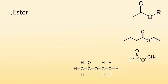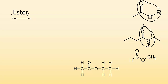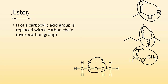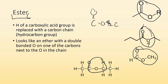Esters look kind of like carboxylic acids and ethers combined. You have a double bond O and an O in the middle of a carbon chain. You're looking for C double bond O, then O, and then the rest of a carbon chain — the H of a carboxylic acid group is replaced with a carbon chain. So it looks like an ether with a double bonded O on one of the carbons next to the chain. Right next to that oxygen there is another double bond O — that's how you know it's an ester.